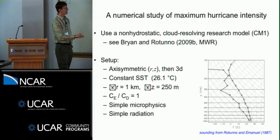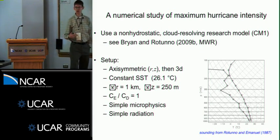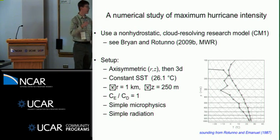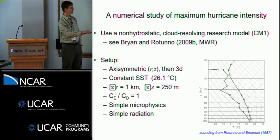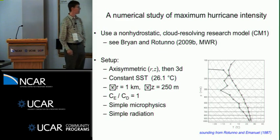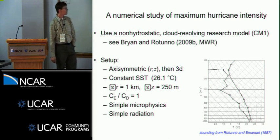First I'm going to run a bunch of axisymmetric simulations and show you the results. If you're not familiar with an axisymmetric model, it's two-dimensional. The two dimensions are the radius away from the storm center and the height above ground. Then later I'll show you what happens when you move to three-dimensional simulations. The sea surface temperature is constant always. There's no ocean coupling. It's 26.1 Celsius. That's again just following from this study here.